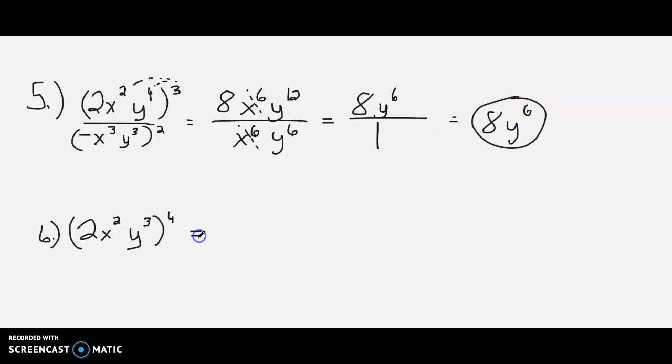For number 6, everything gets raised to the 4th power. 2 to the 4th power is 16. x squared to the 4th power becomes x to the 8th. Multiply the exponents. Then we have y to the 12th. That takes care of number 6.